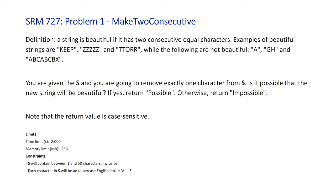The problem goes on to state that you are given a string s, and you are going to remove exactly one character from s. Then it asks: is it possible that the new string will be beautiful? If yes, return 'Possible'. Otherwise, return 'Impossible'. Note that the return value is case sensitive.